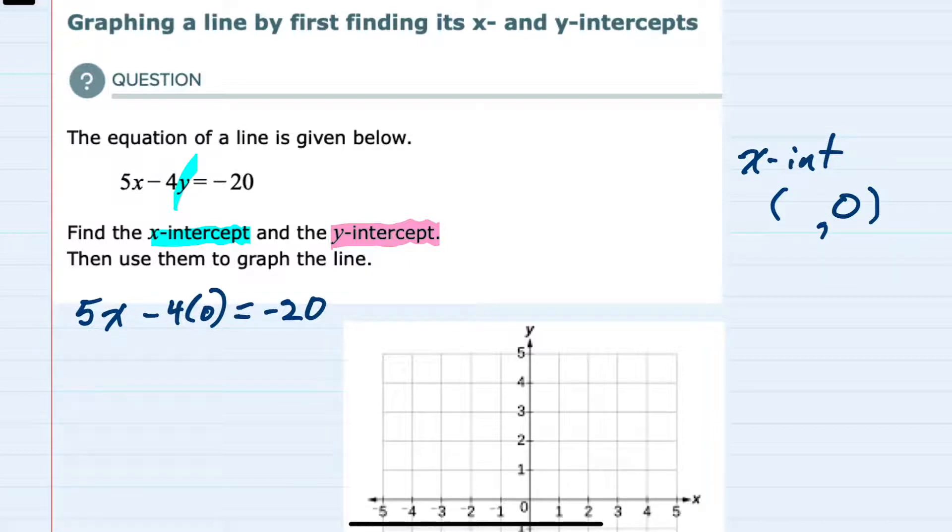Simplifying the 4 times 0 as 0, 5x minus 0 equals negative 20. So 5x equals negative 20. We can solve for x by dividing both sides by 5, and x equals negative 4.